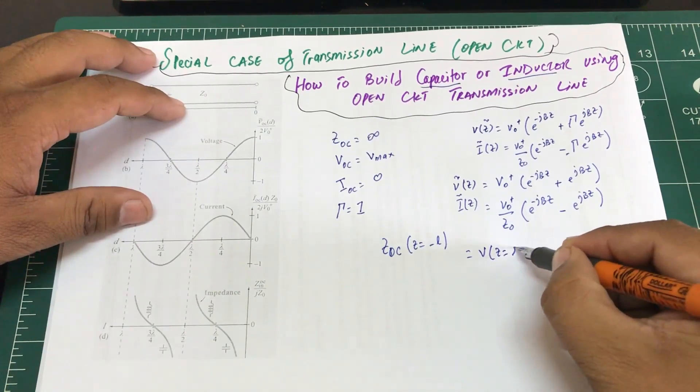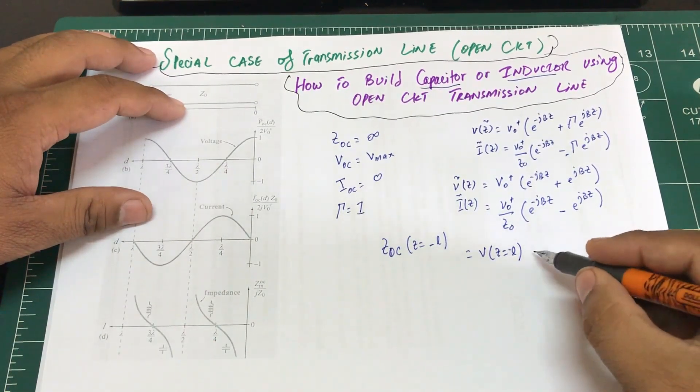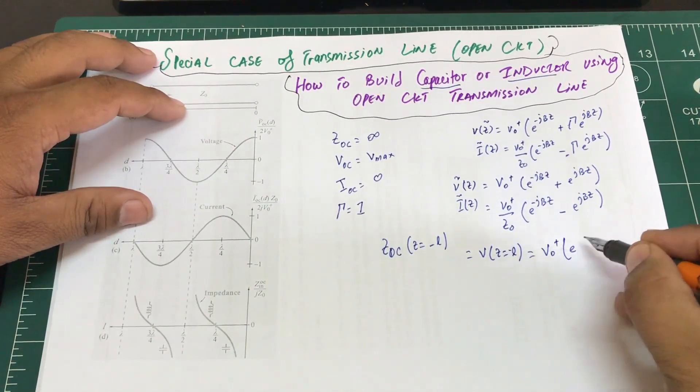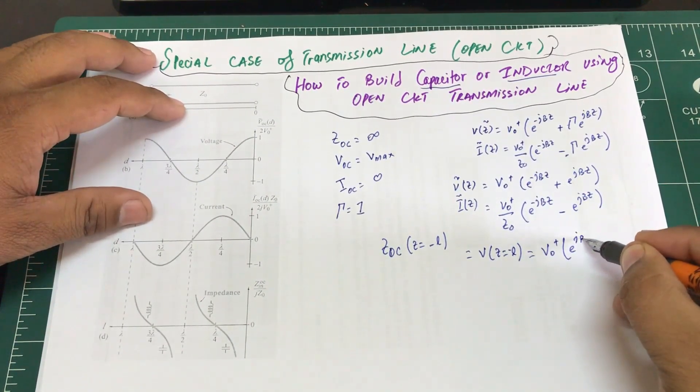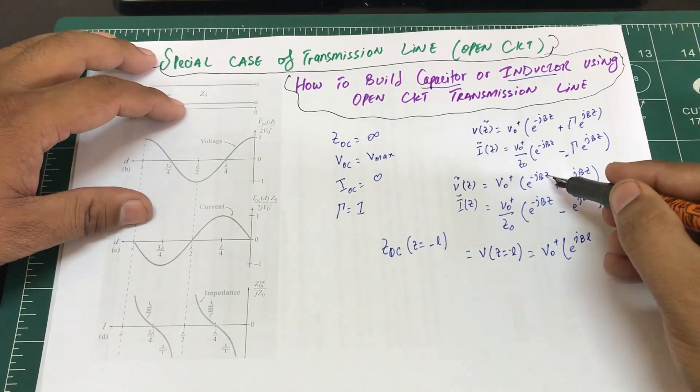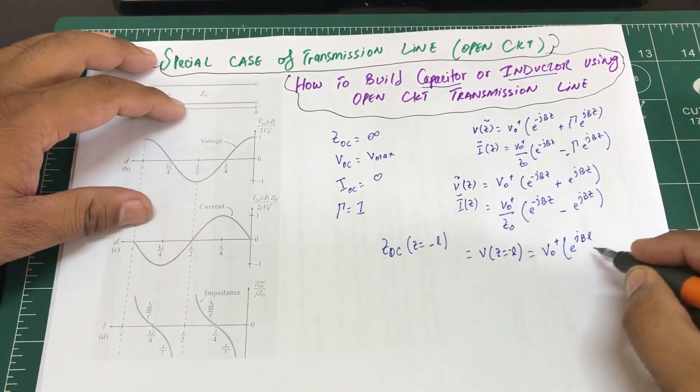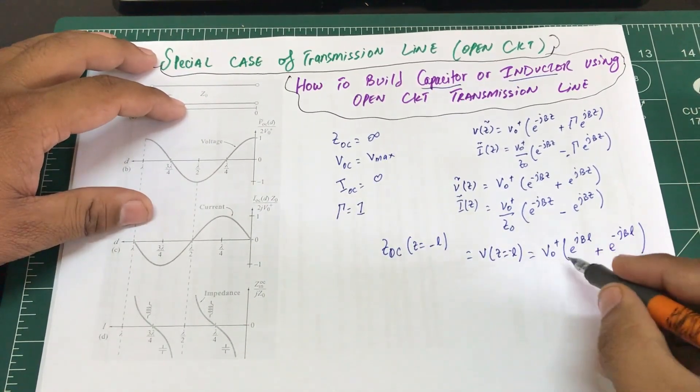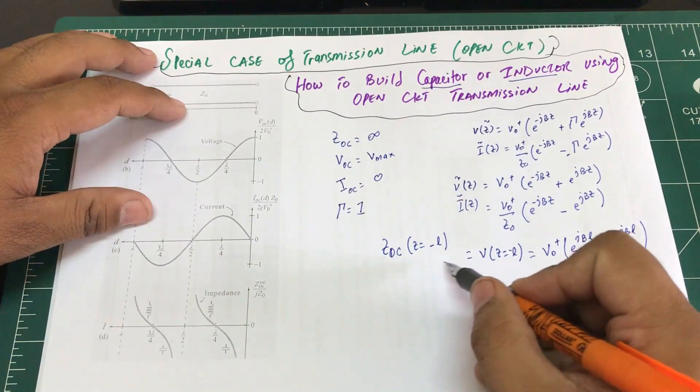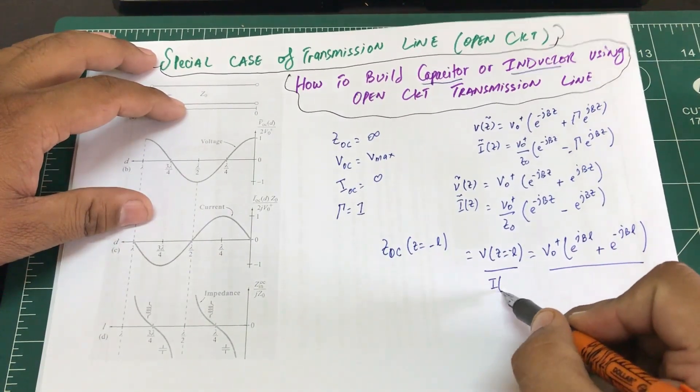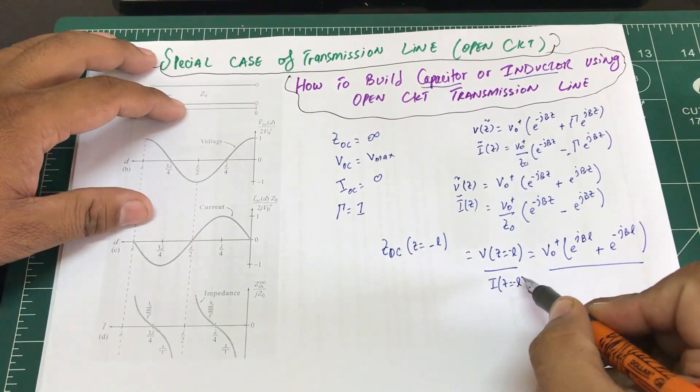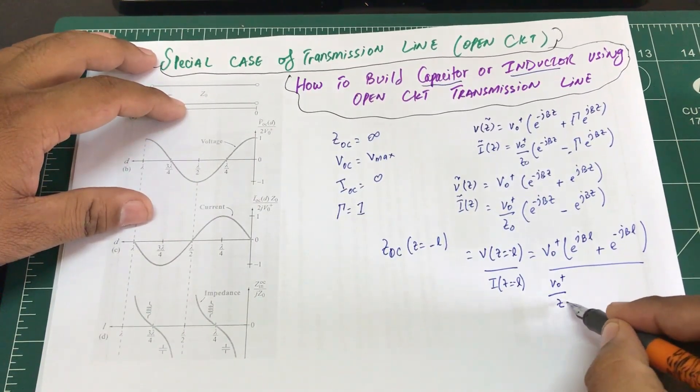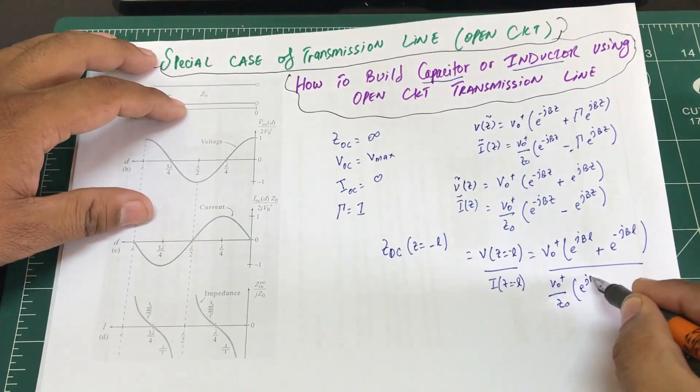So V(z) evaluated at negative l, I'm going to do exactly the same thing: V₀⁺ - the sign will change to jβl (in place of z, I'm plugging in negative l) + e^(-jβl). Divided by - because that's the definition evaluated at z at negative l - this would become (V₀⁺/Z₀)[e^(jβl) - e^(-jβl)].